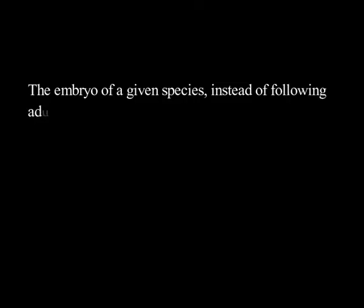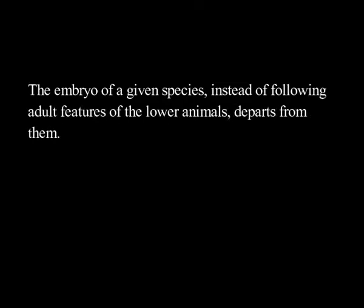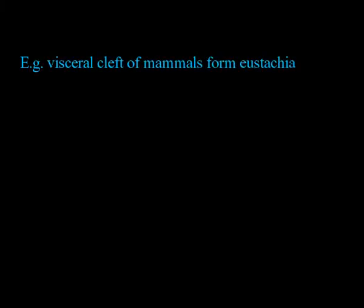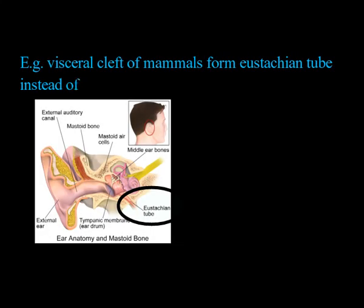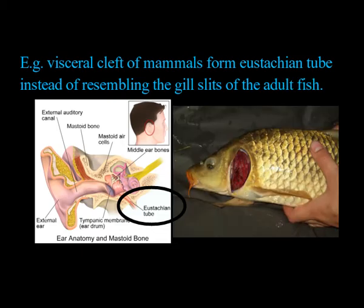The embryo of a given species, instead of following the adult features of lower animals, departs from them. For example, the visceral cleft of mammals forms the eustachian tube instead of resembling the gill slits of the adult fish.